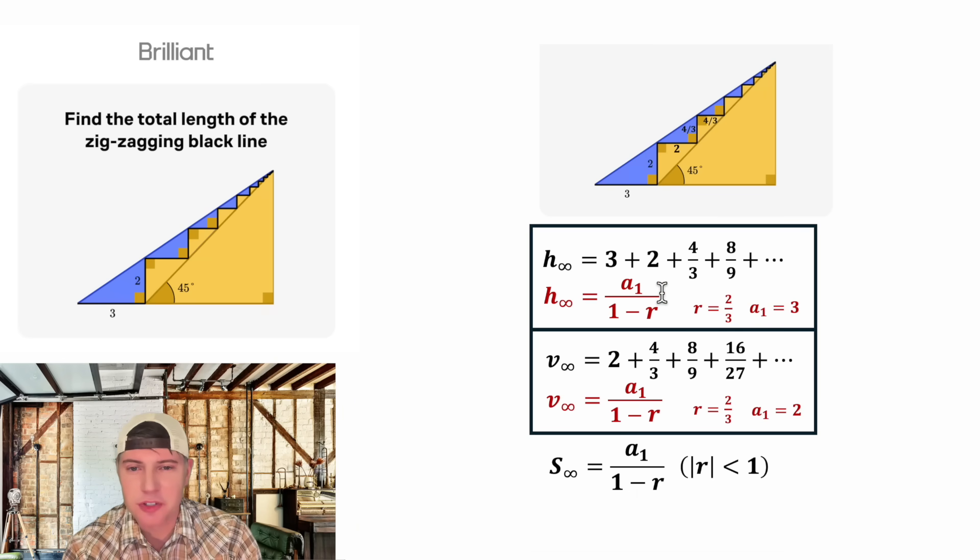For this one the first term was three and the r was two-thirds. And then for this one the first term was two and the r was two-thirds. Now on the bottom of this one, one minus two-thirds is one-third and same thing here, one minus two-thirds is one-third. This means the same thing as three divided by one-third. So let's write it as three divided by one-third.